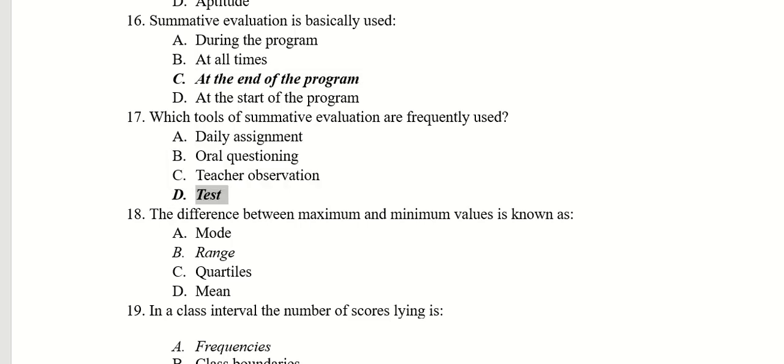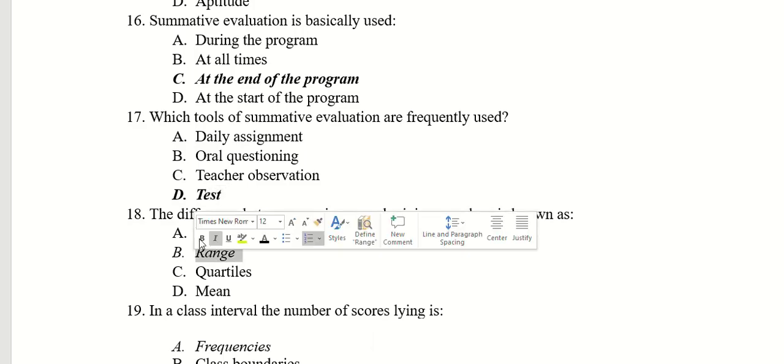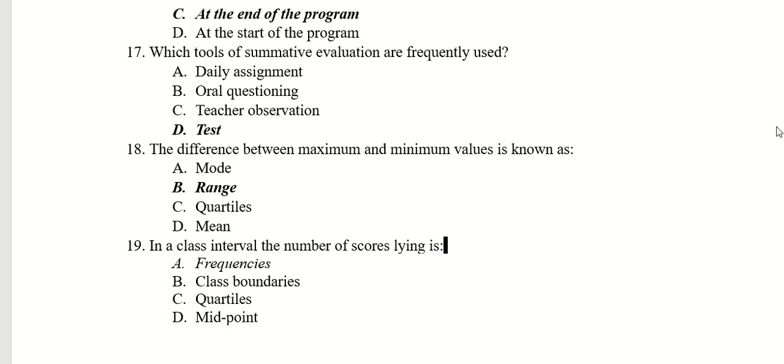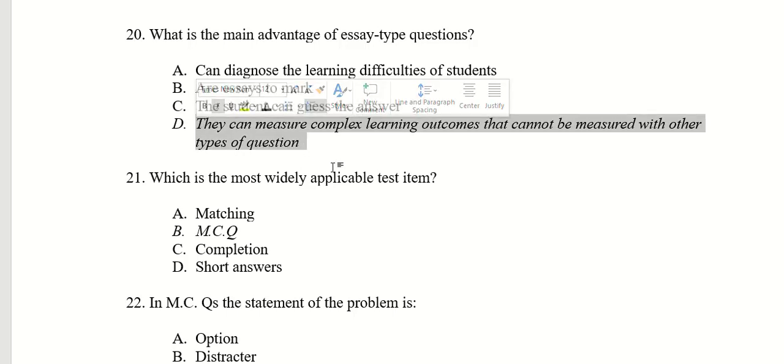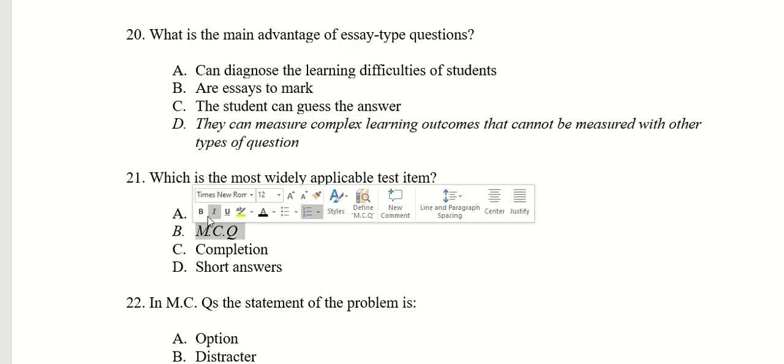The difference between maximum and minimum value is known as range. In a class interval, the number of scores lying as frequencies. What is the main advantage of essay type questions? Right answer is D. They can measure complex learning outcomes that can be measured with other types of questions. What is the most widely applicable test item? MCQs.